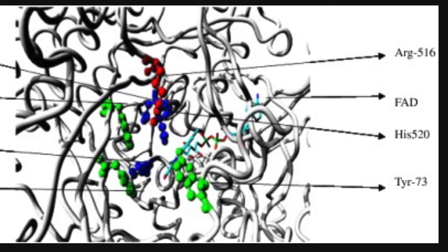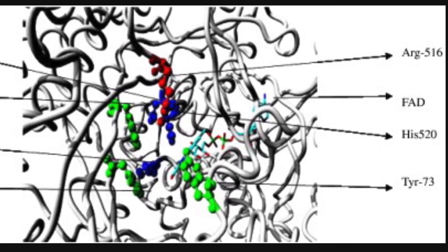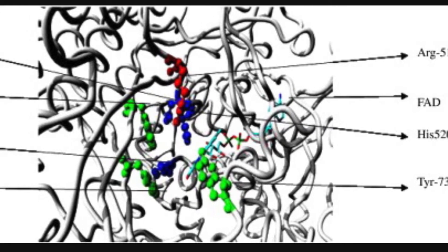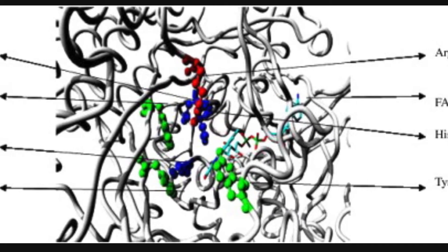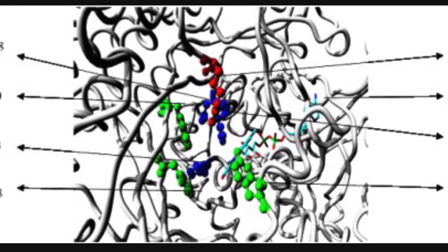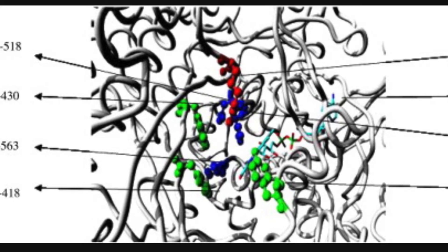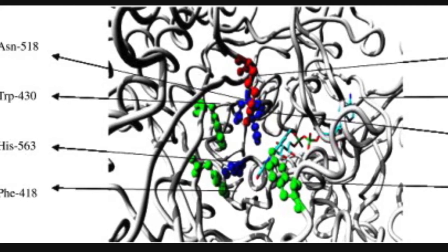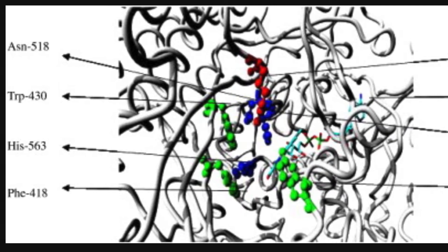Here's an image where the important amino acids are labeled. Arginine 516 is the most important because it binds glucose, but it gets some help from asparagine 518. The aromatic residues tyrosine 73, phenylalanine 418, and tryptophan 430 help orient the glucose correctly so that glucose oxidation occurs at maximum speed. Finally, histidine 520 and histidine 563 form hydrogen bonds with the one-alcohol of glucose during the reaction, which is part of the specificity that drives the binding of glucose to this enzyme.